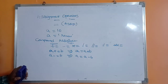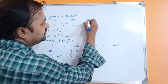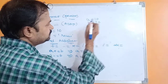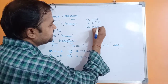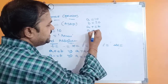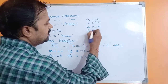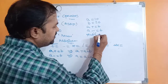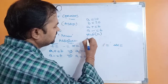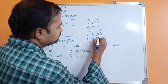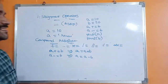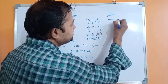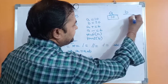Let's take an example. Let the value of a be 10 and b be 20. The first statement is a += b, and the next statement is a -= b. Then we print the value of a and b.